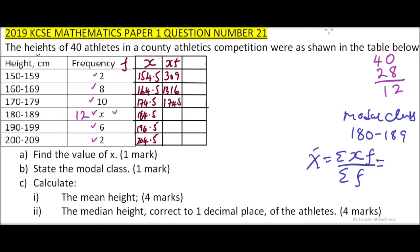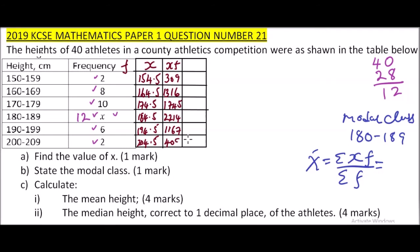You multiply here, that is 12 times 184, you'll be able to get 2214. Then we have this one, we'll get 1167, and finally we'll get 409. So we add up the total here of XF, it will give us 7140. The total frequency is 40. So we can now get the mean, and that will be 7140 divided by 40, and when you divide you get 179.